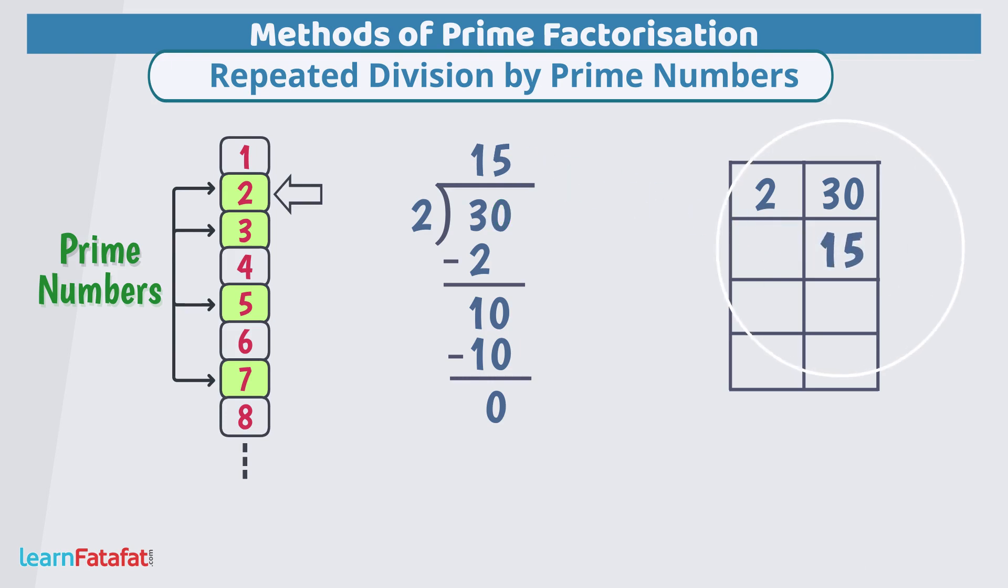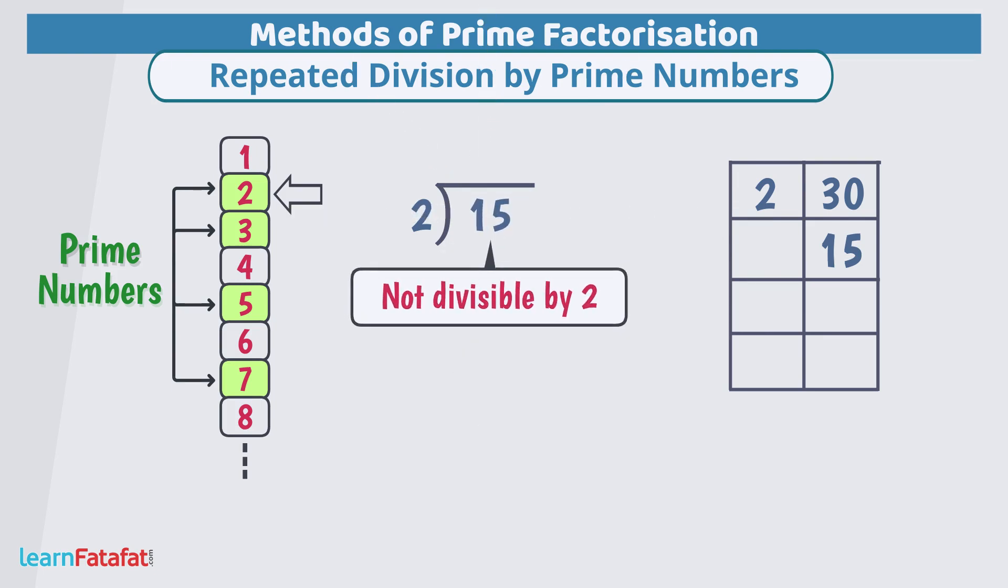We will write 2 here and the quotient 15 below the original number. Check if the new number 15 is also divisible by prime number 2. Here test for divisibility by 2 fails as units place digit of 15 is not 0, 2, 4, 6 or 8. So, 2 cannot divide this number. So, we select next prime number 3.